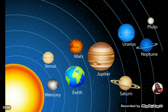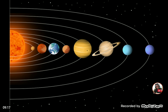The earth orbits the sun in what is called an elliptical orbit — meaning the path it takes is not fully circular but more like an oval or egg shape. Because of this, there are times in that orbit when the earth is closer to the sun than normal, and at other times it is at its farthest point.